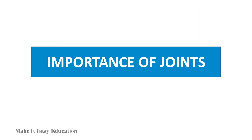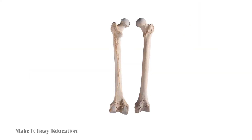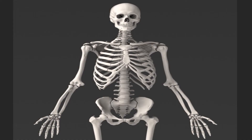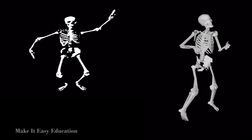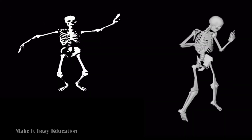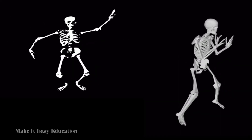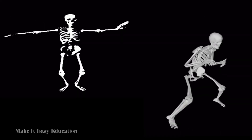Importance of joints: The bones present in the human body are rigid and cannot bend. The joints make our body flexible by allowing movement in different directions. There are many different types of joints, and each type allows movement in a certain manner.